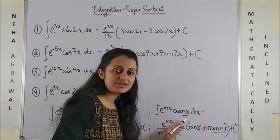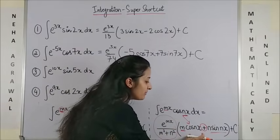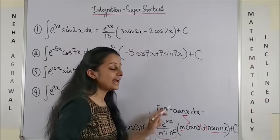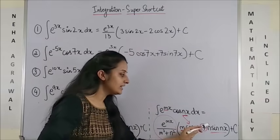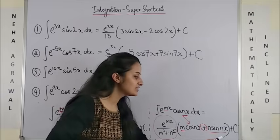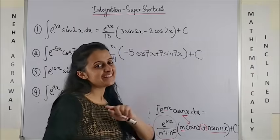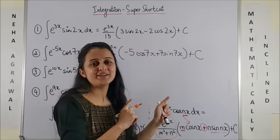And whenever you have cos nx, this thing is copied down as it is with m. And then the next one is n into sin nx plus c. Have a look and then we continue our journey with the questions.